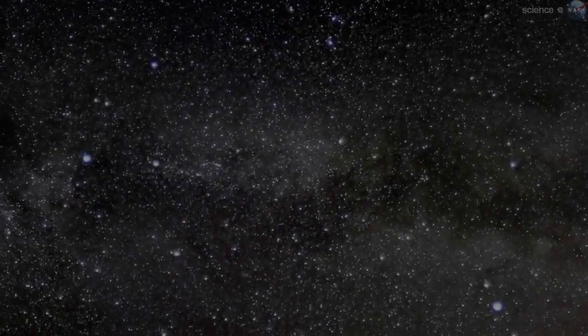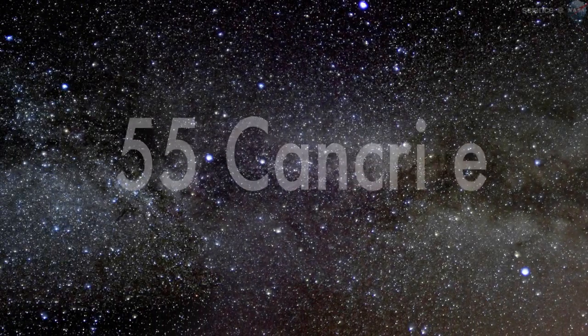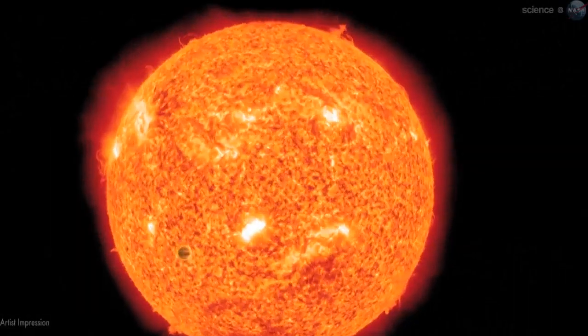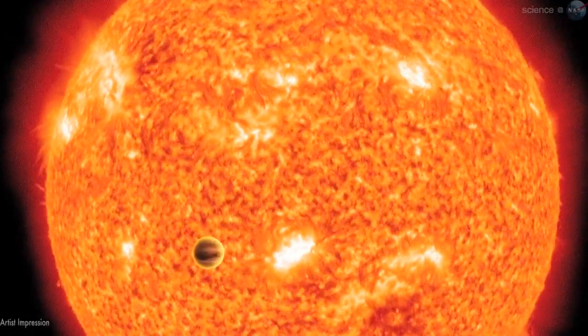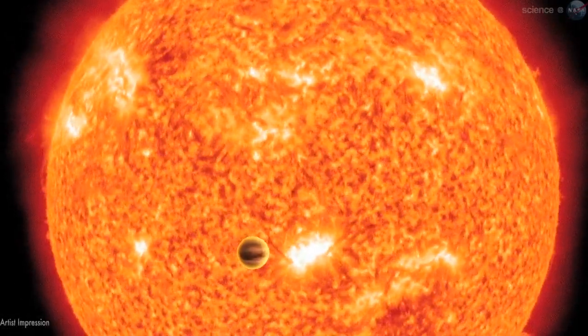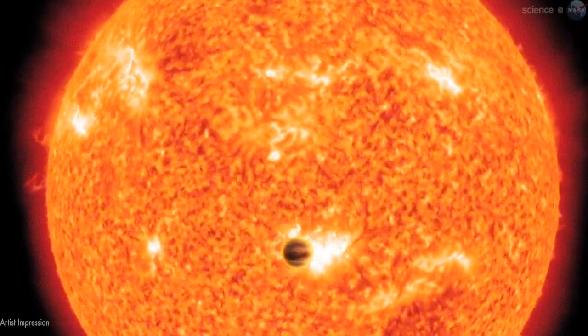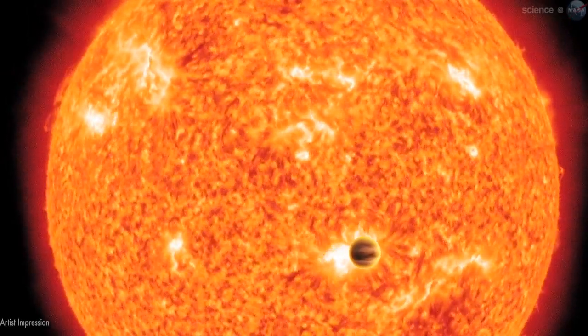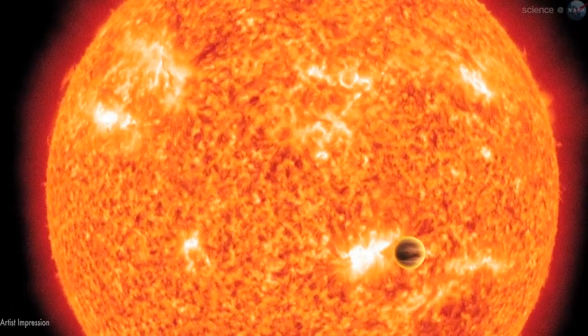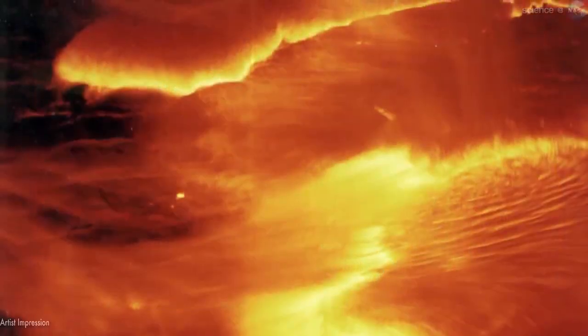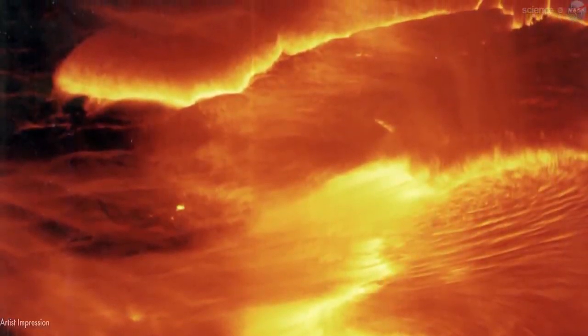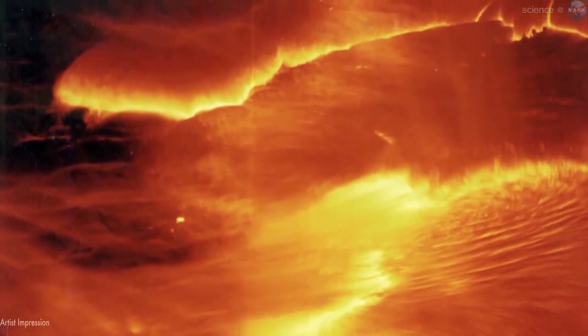Forty light-years from Earth, a rocky world named 55 Cancri e circles perilously close to a stellar inferno. Completing one orbit in only 18 hours, the alien planet is 26 times closer to its parent star than Mercury is to the Sun. If Earth were in the same position, the soil beneath our feet would heat up to about 3200 degrees Fahrenheit.